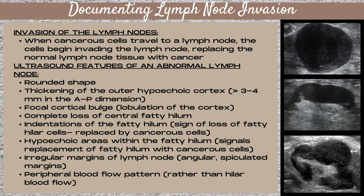Ultrasound features of an abnormal lymph node include a rounded shape, thickening of the outer hypoechoic cortex greater than three to four millimeters in the AP — the height dimension, which is a vertical measurement — a focal cortical bulge, which is a lobulation of the cortex, a complete loss of the central fatty hilum, indentations of the fatty hilum, hypoechoic areas within the fatty hilum, and irregular angular spiculated margins.